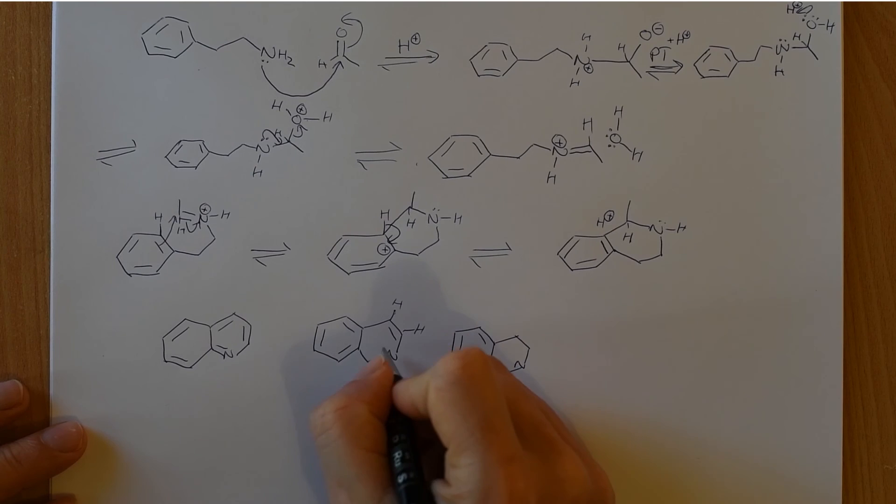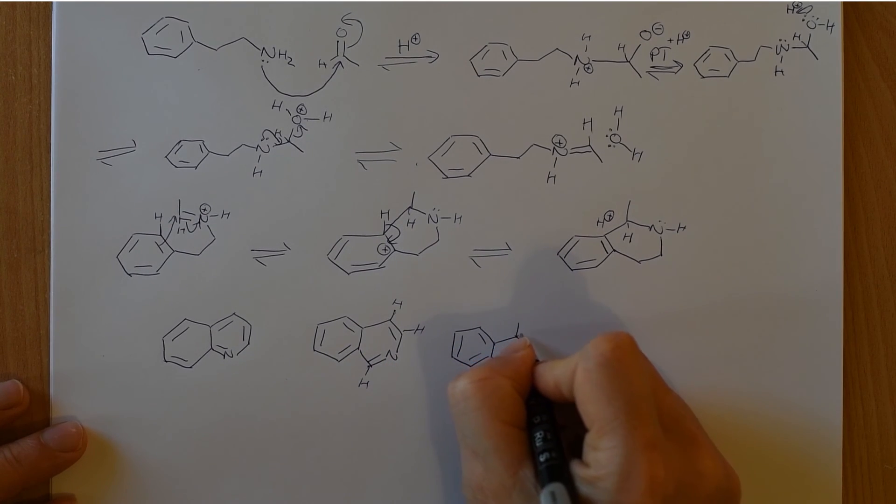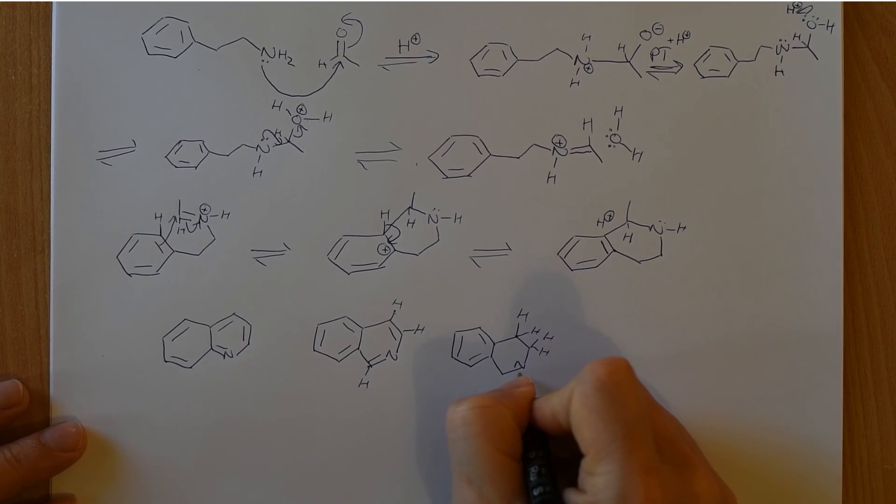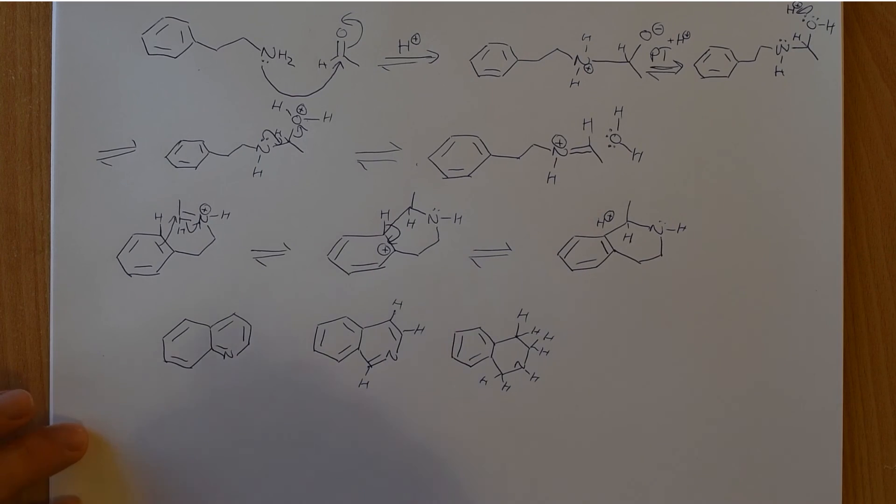So this molecule here would have one, two, three hydrogens on the nitrogen-containing ring, and then over here it would have one, two, three, four, five, six, seven. So we've added in four extra hydrogens. It's a tetrahydroisoquinoline.